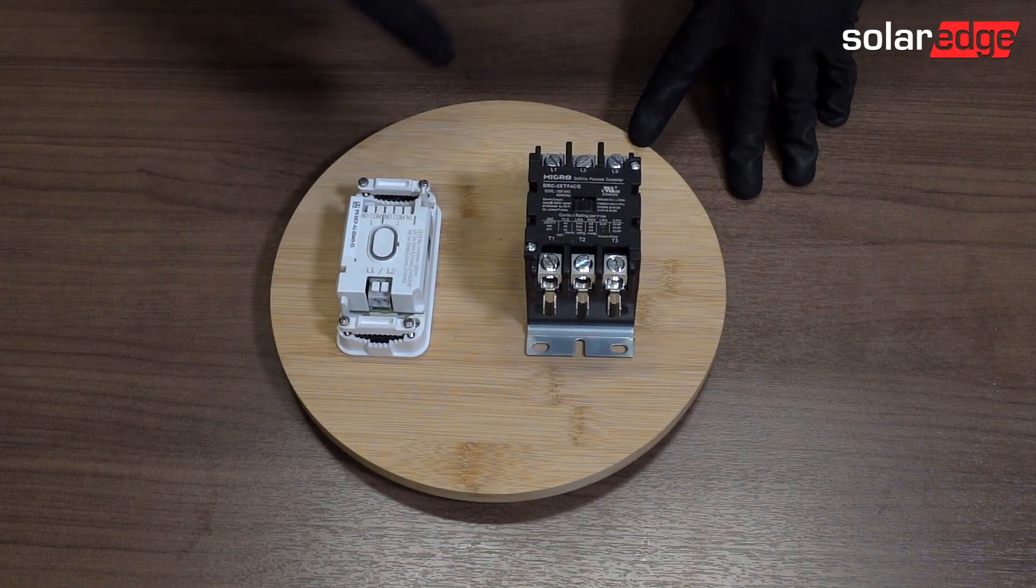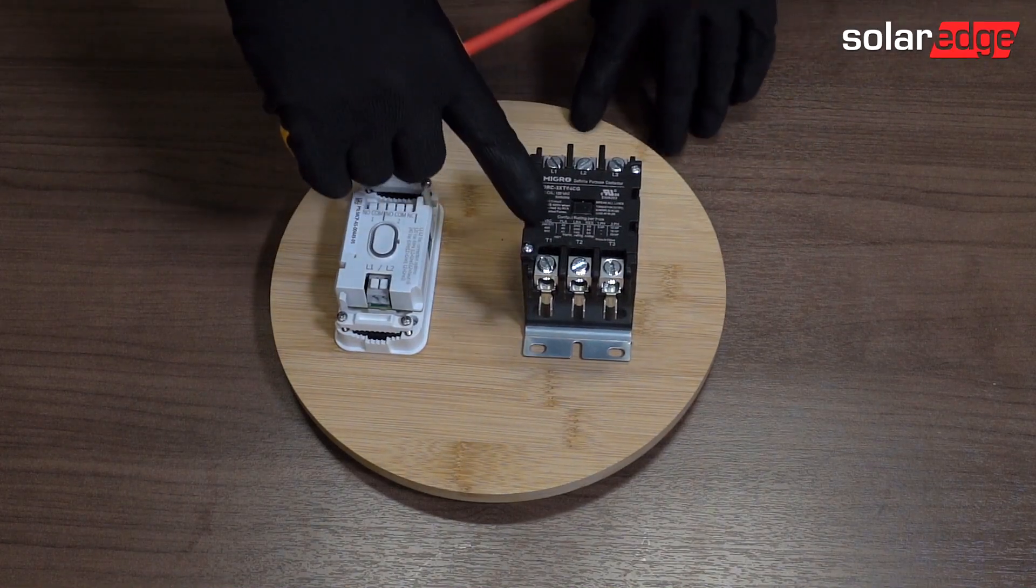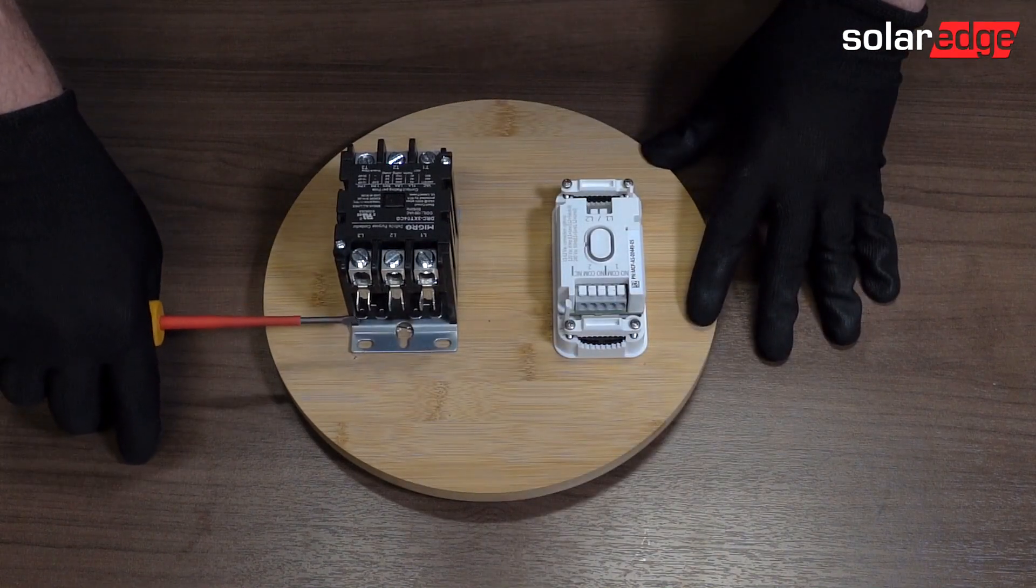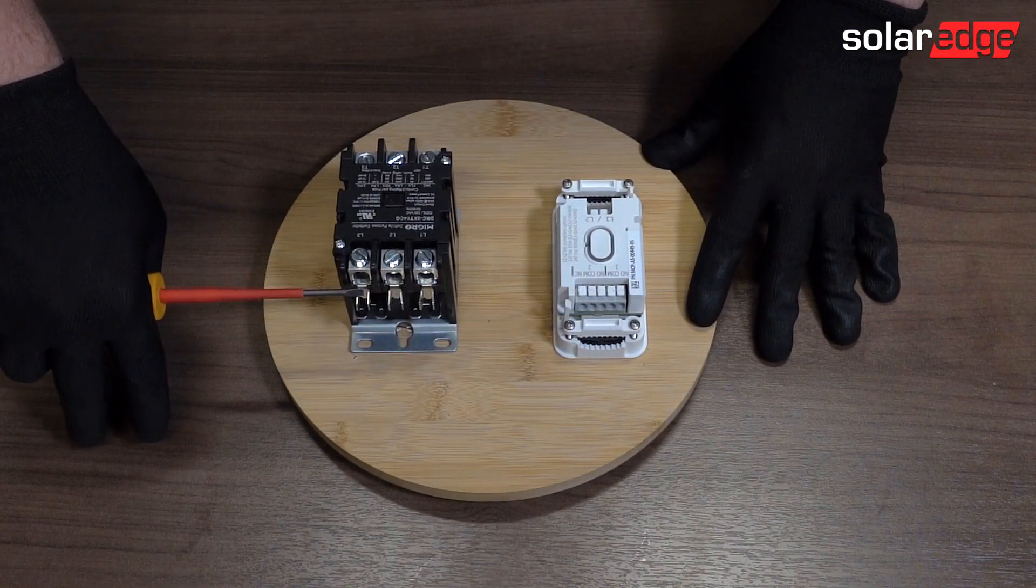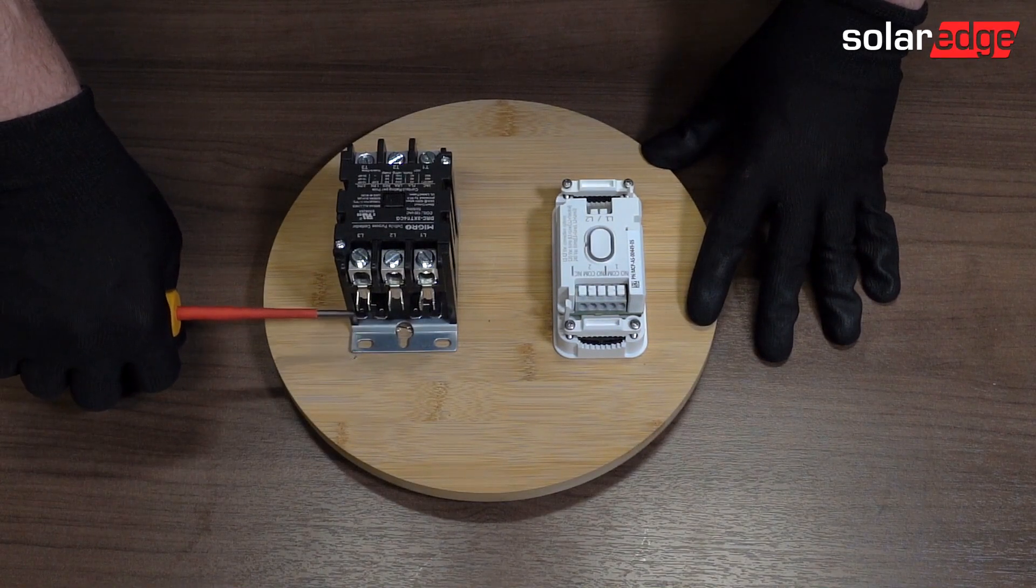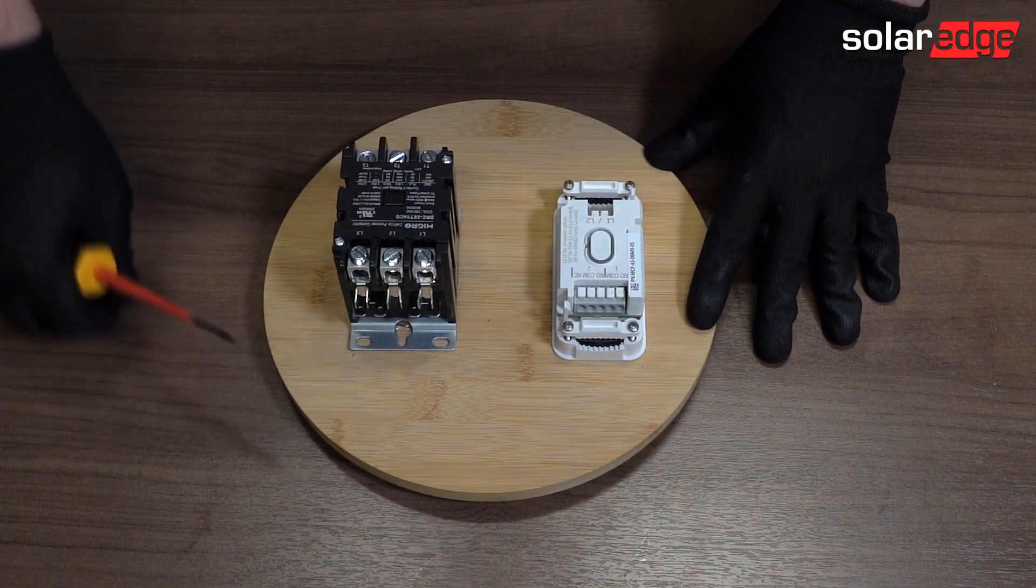Now coils are usually labeled A1 and A2, and this contactor is unique because the coils are on the bottom here. So we're going to use the spade connectors on the top for our power supply, and the spade connectors on the bottom going in a different orientation for the coil control.